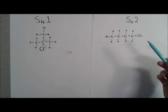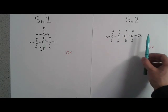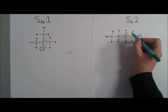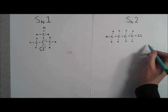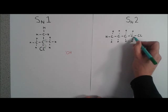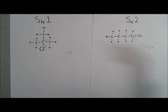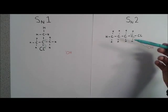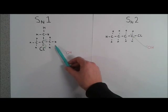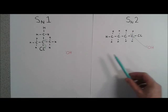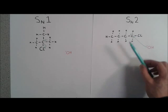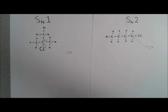In the SN2 reaction, we've got 1-chlorobutane. The OH- can easily attack this delta positive carbon. The lone pair of electrons from the oxygen attacks the carbon because it's not sterically hindered. These hydrogens are much smaller than the CH3 groups that block that carbon. There's plenty of space for the OH- to attack.